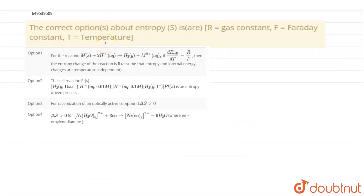Hi, hello, see here in this question. They are asking that the correct option is about entropy. R is nothing but gas constant, F is Faraday constant and T is temperature.